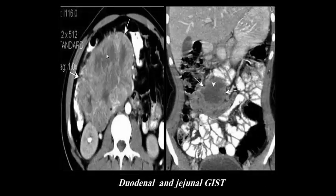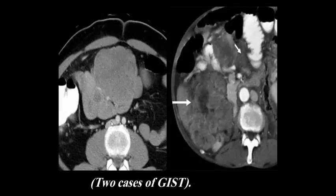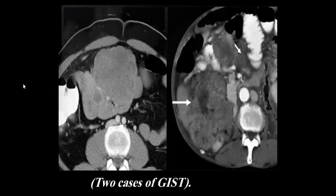Duodenal and regional GIST — gastrointestinal stromal tumors — present as a large irregular mass with heterogeneous enhancement, areas of low attenuation, cystic degeneration, and exophytic extension compressing the bowel. Two cases of GIST are shown.